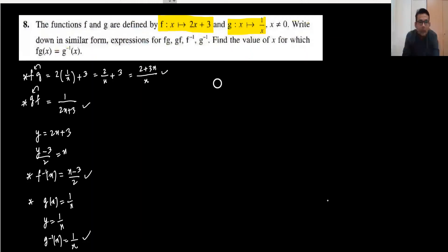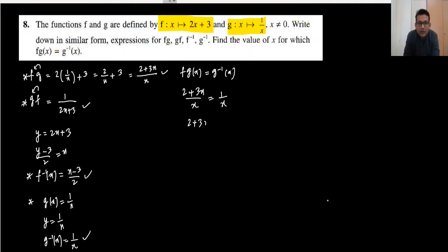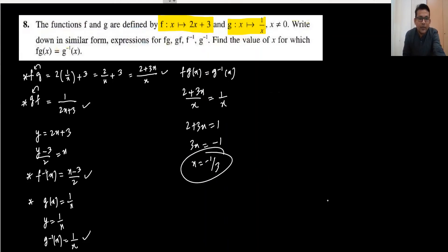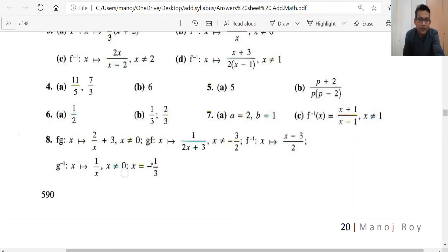Now find the value of x for which f(g(x)) equals g inverse(x). f(g) is 2 plus 3x upon x, and g inverse is 1 upon x. Cross-multiplying: 2 plus 3x equals 1. Note x equals 0 is not possible as it makes the denominator undefined. So 3x equals minus 1, giving x equals minus 1 upon 3. The answer is confirmed correct.